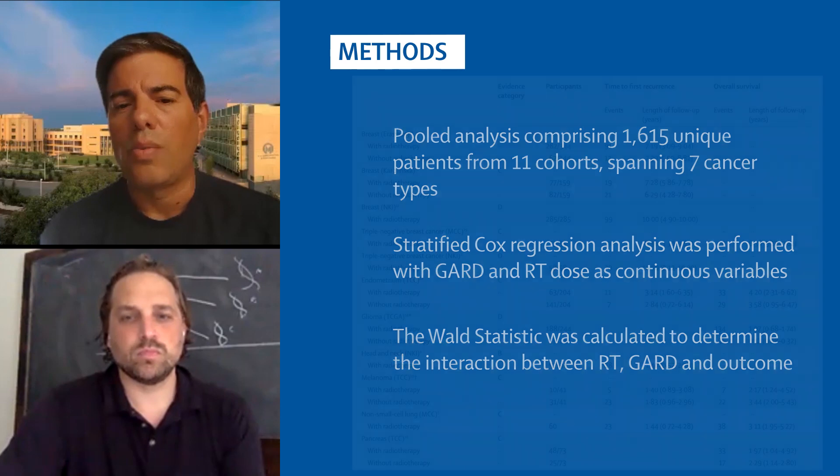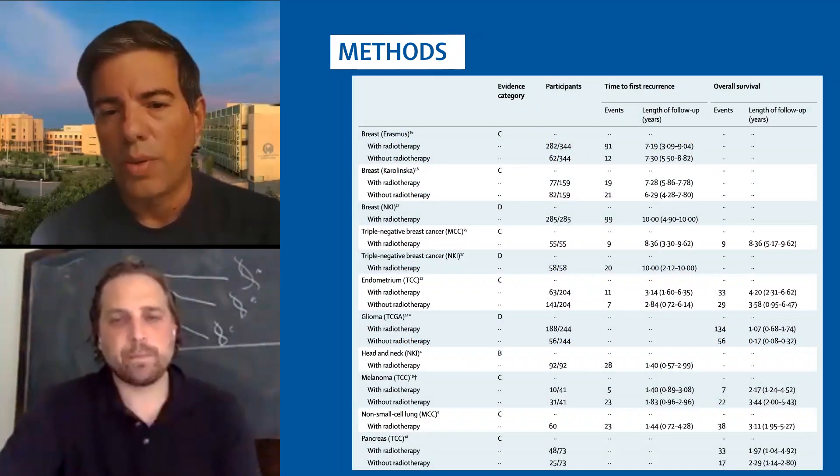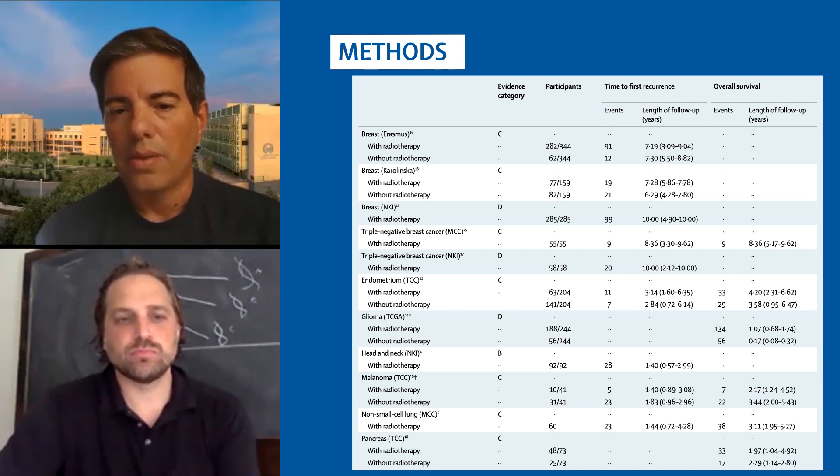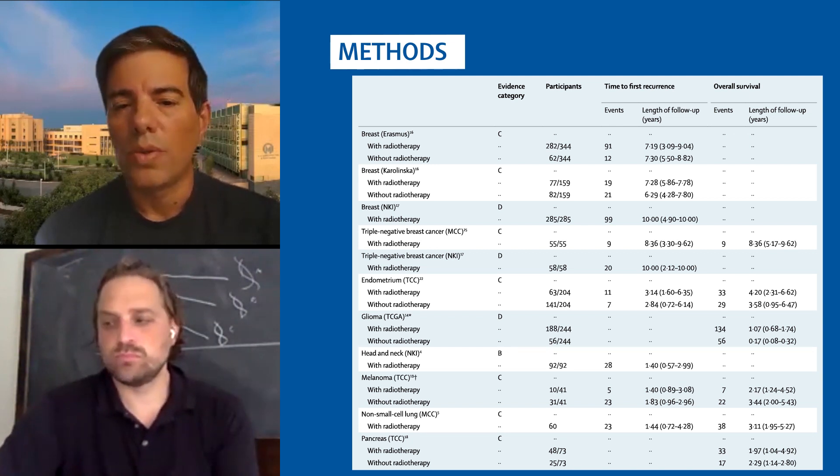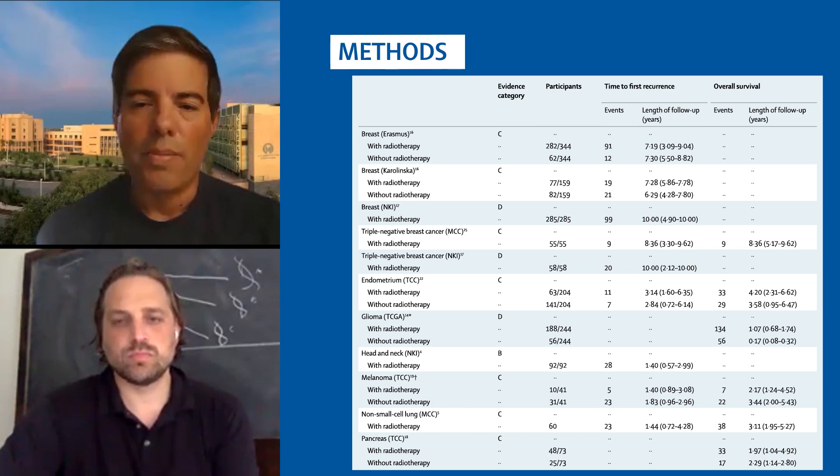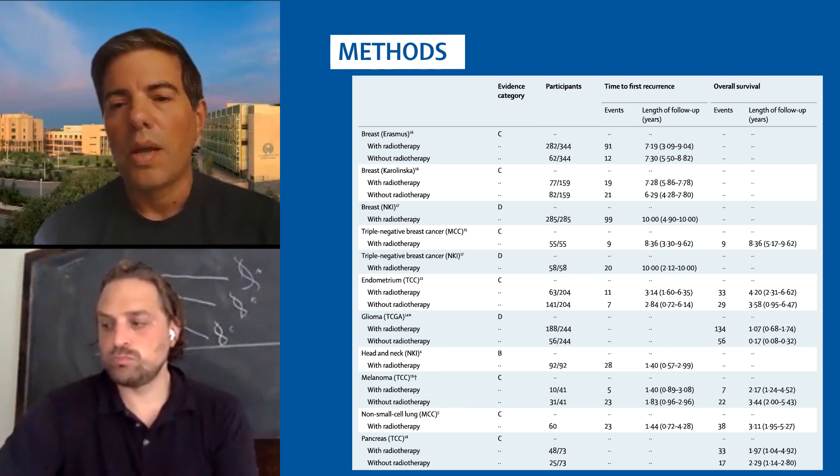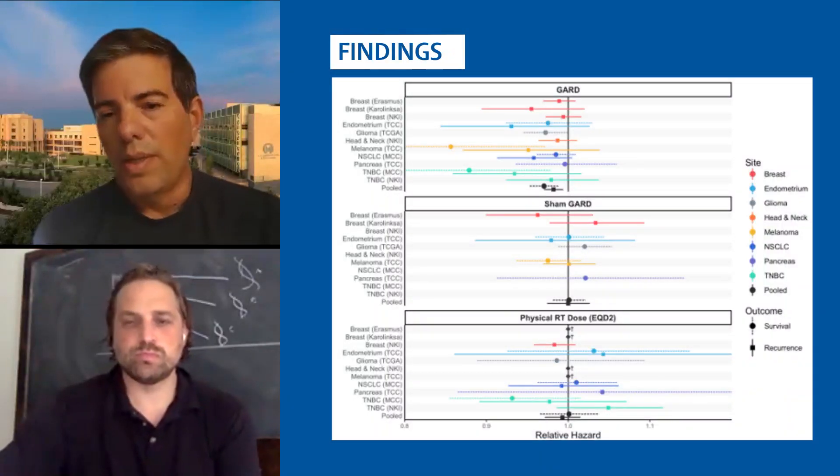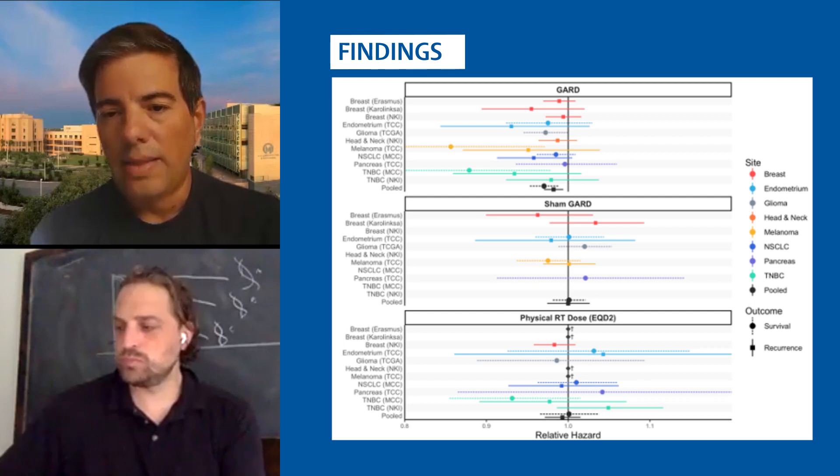So in the next slide, what we show is really the description of these cohorts that include patients with breast cancer, glioma, head and neck cancer, melanoma, non-small cell lung cancer, pancreas, and also triple negative breast cancer. Some of them had radiation, some of them did not have radiation. And we're using the patients that didn't have radiation as negative controls. So we integrated all this into a meta-analysis.